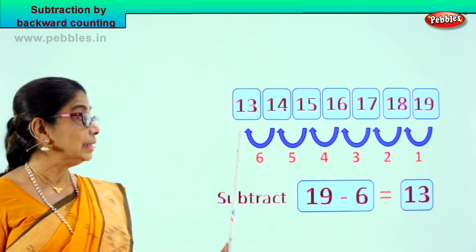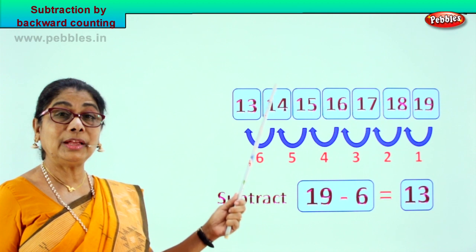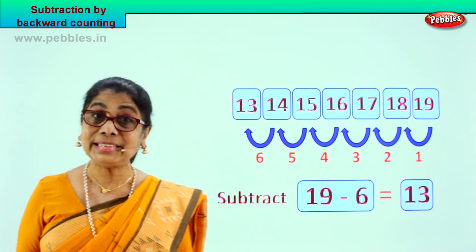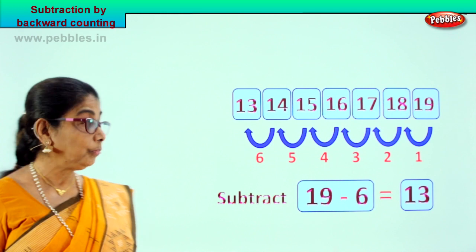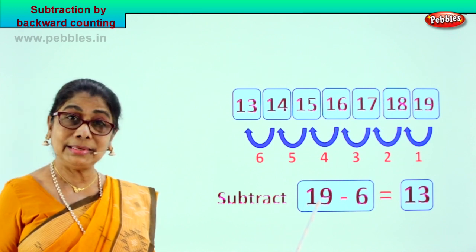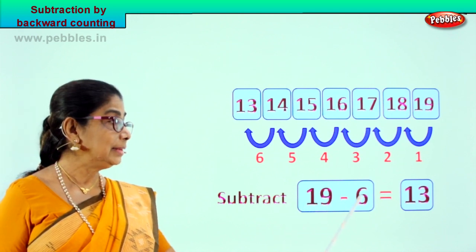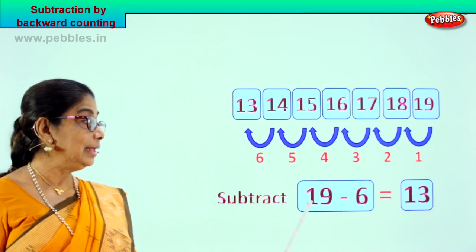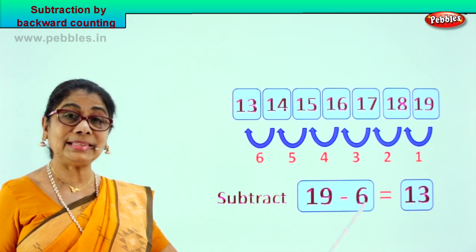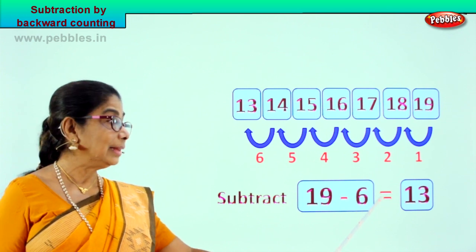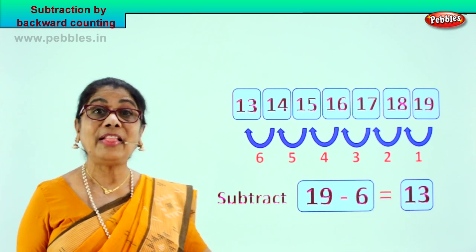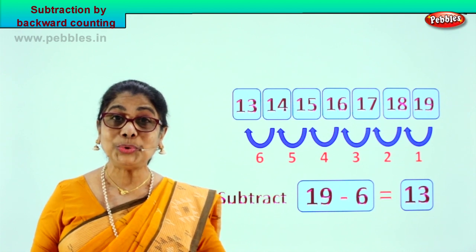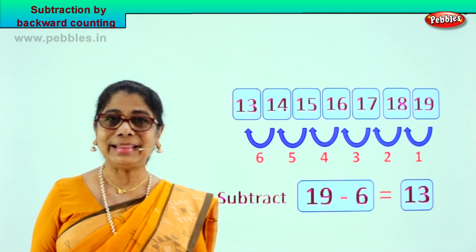We counted 6 steps backward and arrived at the answer: 13. So 19 minus 6 is equal to 13. Take away 6 steps backward and that will give you answer 13. Did you enjoy doing it? Shall we take another exercise?